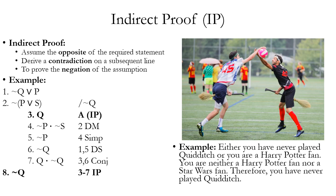After making our assumption Q on line three, we indent the rest of the lines of our proof to show the scope of our assumption. All the lines following given that assumption have to be indented to show those lines of the proof do not follow from our original premises — lines one and two in this case — but rather from those original premises and our assumption. We're looking to generate a contradiction, which should be a conjunction of contradictory propositions. You can see on line seven it's Q dot tilde Q — Q and not Q.